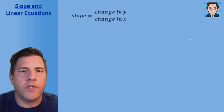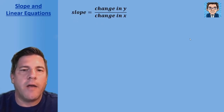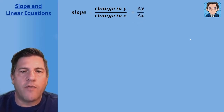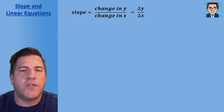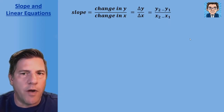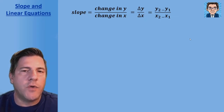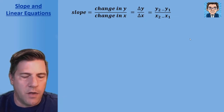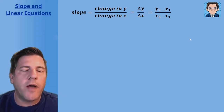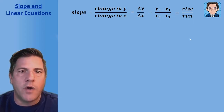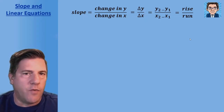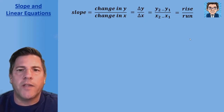Let's review slope. Slope is going to be the change in y over the change in x. Another way we see that written is delta y over delta x — delta just stands for the difference or the change. We can also see it written as y2 minus y1 over x2 minus x1. Or graphically, you might see it referred to as the rise over the run: how much it changes up and down divided by how much it changes left and right.